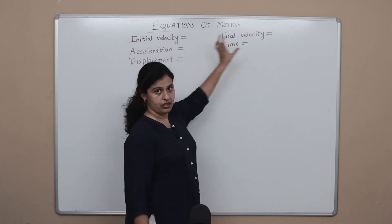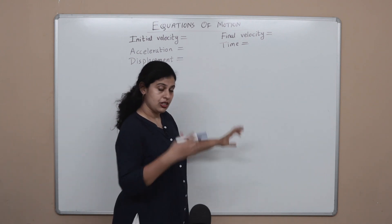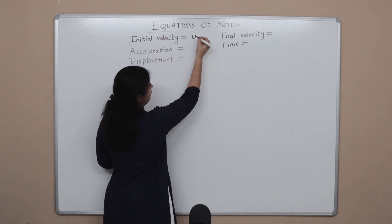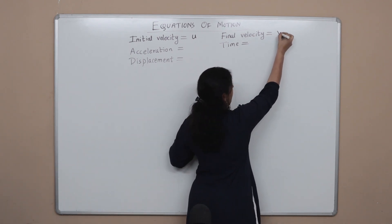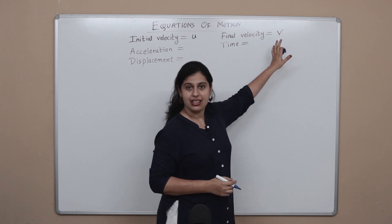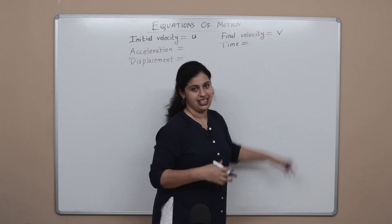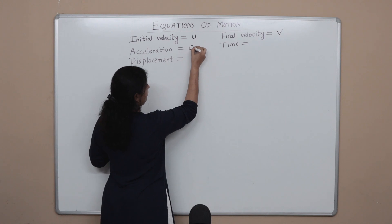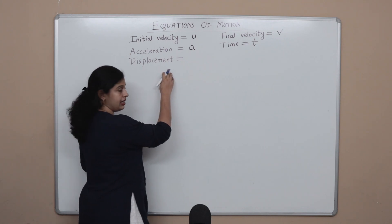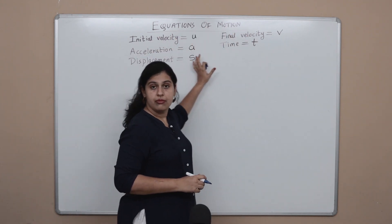Obviously we are not going to use these big terms in our formulas, right? We are going to need smaller variables, alphabets which will represent these terms. So let's quickly look at those alphabets. Initial velocity is always represented with the alphabet u, final velocity takes v. Now how do we remember this easily? Initial comes first, final comes afterwards. In the English alphabet, u comes first, v comes afterwards, that's how it goes. Acceleration is denoted with an a, time t, and displacement is generally denoted with the letter s. So these are the main terms that we are going to come across.